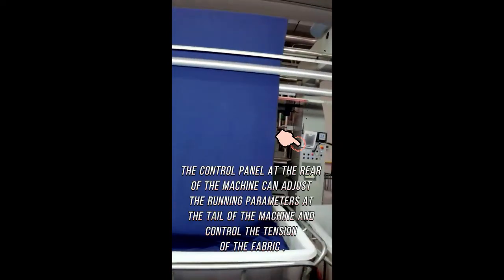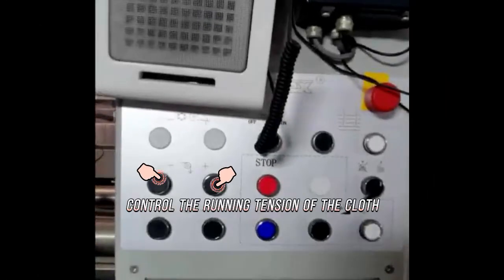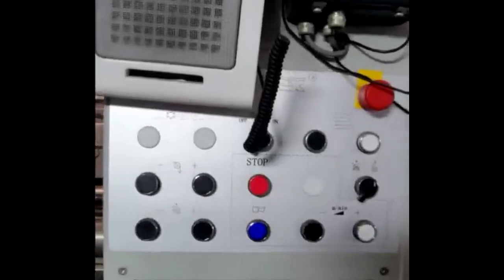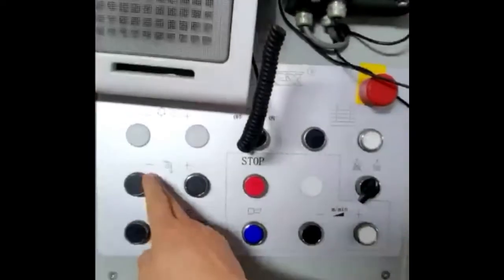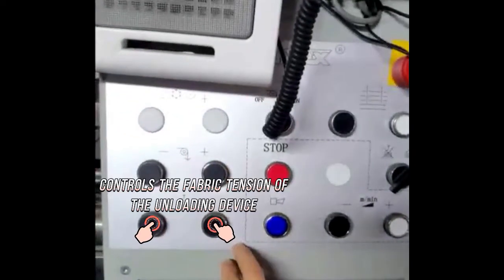The control panel at the rear of the machine can adjust the running parameters at the tail of the machine and control the tension of the fabric. Control the running tension of the cloth. Controls the fabric tension of the unloading device.